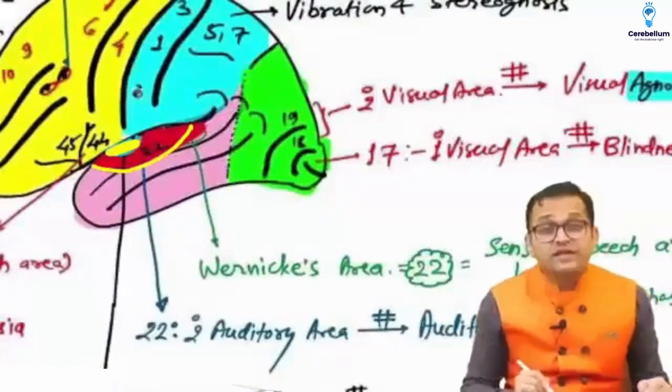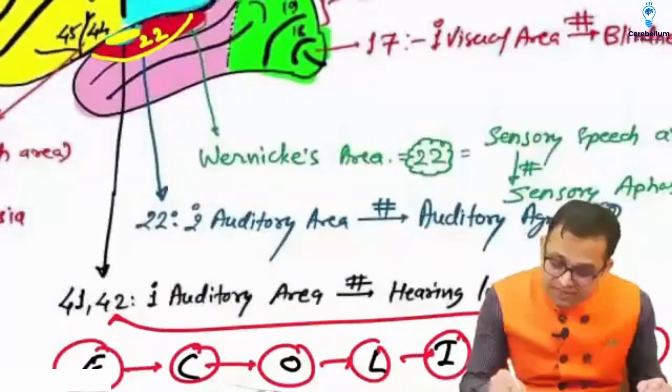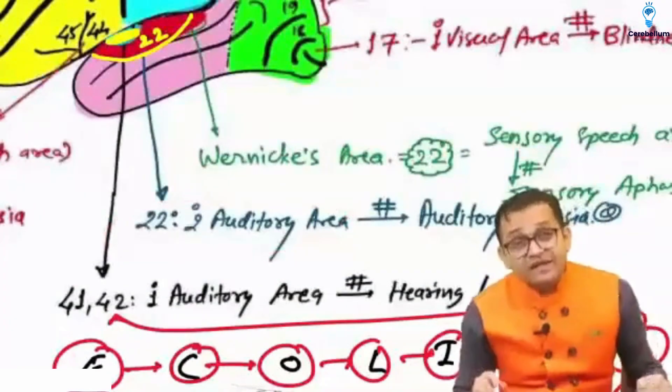And around it, there is a secondary auditory area, which is the area number 22. This is the secondary auditory area, area number 22.